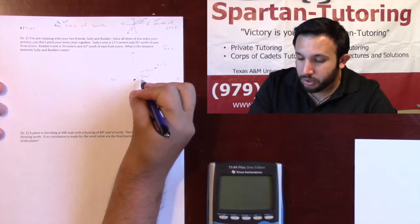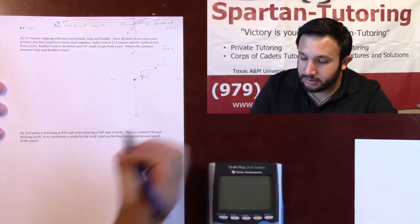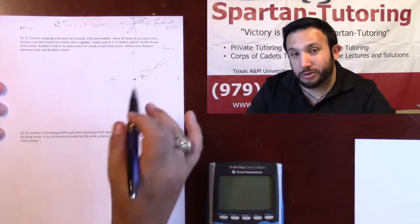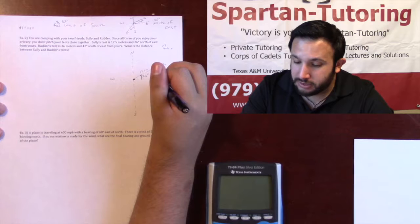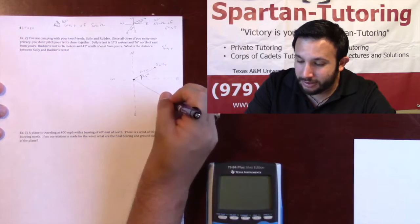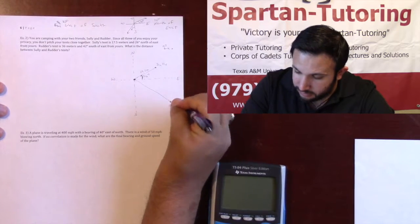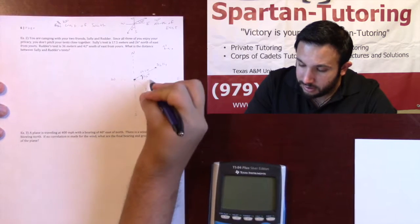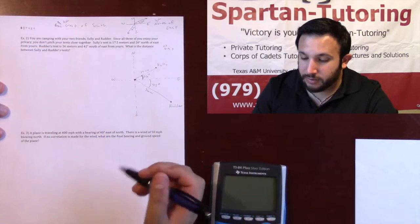So here's Soli's tent — 17.5 meters at 26 degrees north of east. I go east and then 26 degrees north of that. For Rudder's tent, it's 36 meters at 42 degrees south of east. I start east and go 42 degrees south of that, so Rudder's tent ends up down here at 36 meters, 42 degrees south of east.